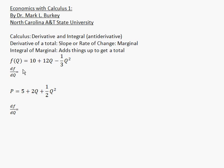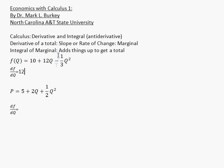Here we have some function of q. Suppose f(q) = 10 + 12q − 1/3 q². What's the derivative of this function with respect to q? The derivative of the constant 10 is 0, the derivative of 12q is 12, and the derivative of −1/3 q² — multiply by 2 to get 2/3 q and subtract 1 from the exponent — gives us minus 2/3 q. So the derivative is 12 − 2/3 q.